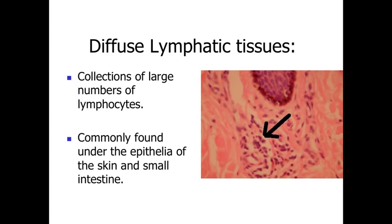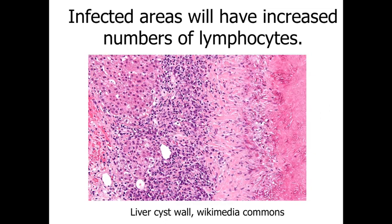Instead of having the maximally keratinized stratified squamous epithelium as a nice boundary around the outside of the body, the digestive tract has a very simple epithelium, just one cell layer thick, making it especially susceptible to potential invasion by foreign materials and pathogenic entities such as bacteria. So we're going to have these diffuse lymphatic tissues — collections of lymphocytes — migrating through the region where they're needed, at locations where foreign or pathogenic materials are likely to enter the body.